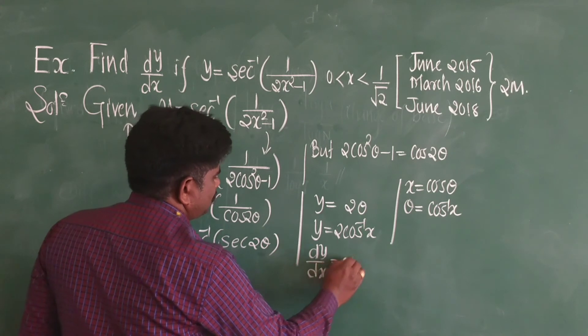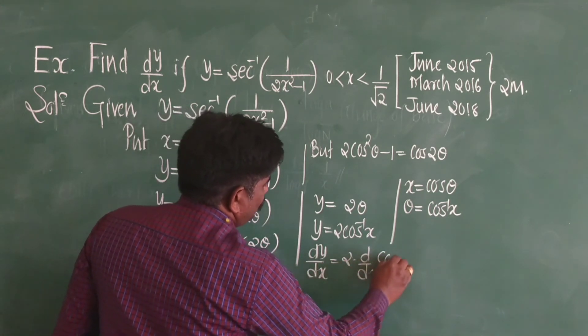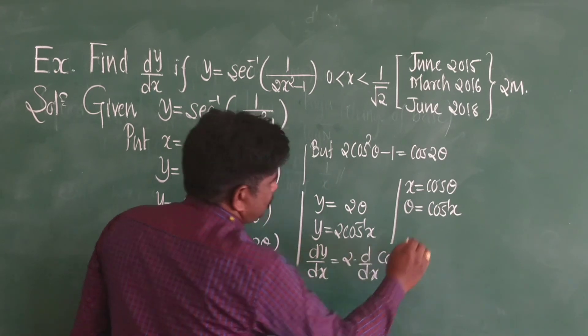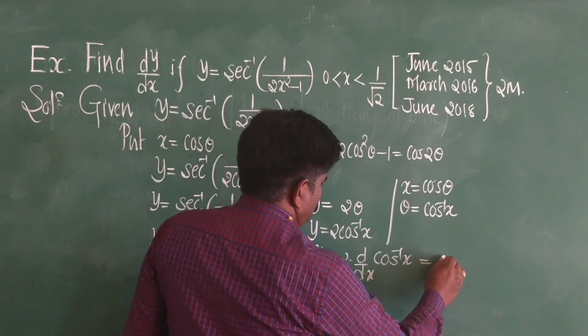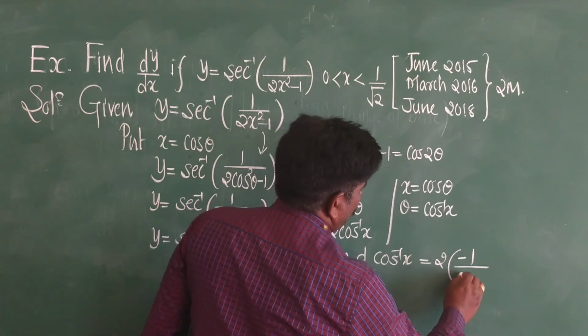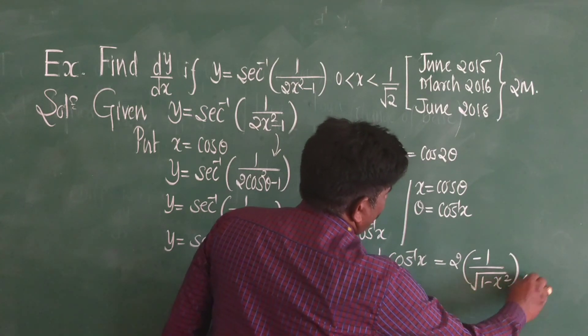dy/dx is equal to 2 times d/dx of cos inverse x, which is equal to 2 times minus 1 upon under the root 1 minus x square.